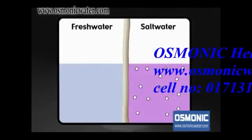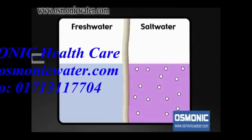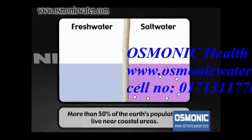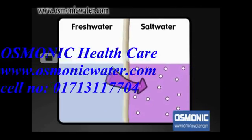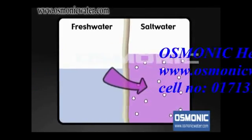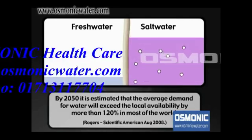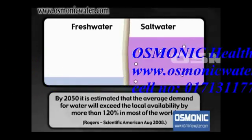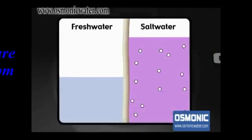Osmosis is a naturally occurring process where a solvent, such as water, passes through a semi-permeable barrier. The semi-permeable barrier, or membrane, allows some things to pass through it but not others. In nature, the direction of flow through the membrane is from a less concentrated solution, such as freshwater, to a more concentrated solution, such as seawater, until equilibrium is reached.